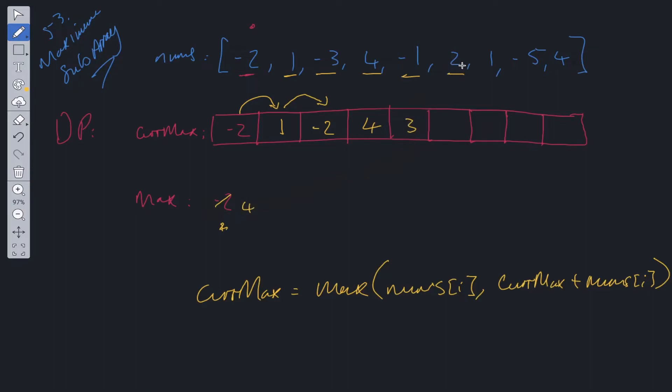At this point, we have a maximum between 2 and 2 plus 3. So that is going to become 5. We update the max here, 5. At this point, we have a maximum between 1 and 1 plus 5. So that's going to be 6. Maximum is updated again to 6.